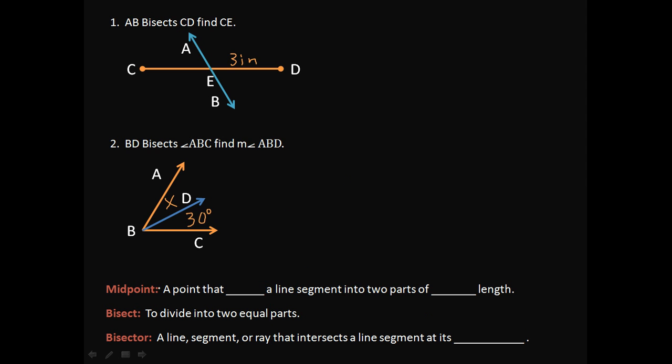So a midpoint is a point that divides or cuts a line segment into two parts of equal length. And bisect is to divide into two equal parts. And a bisector is a line segment or ray that intersects a line segment at its midpoint. Very good. Thank you.